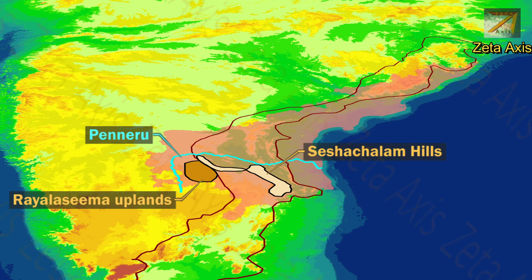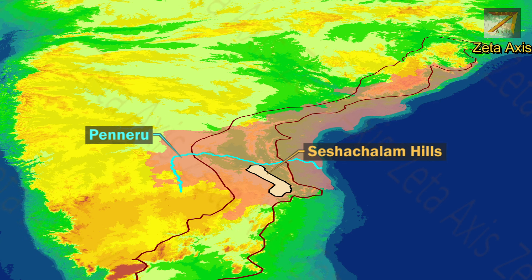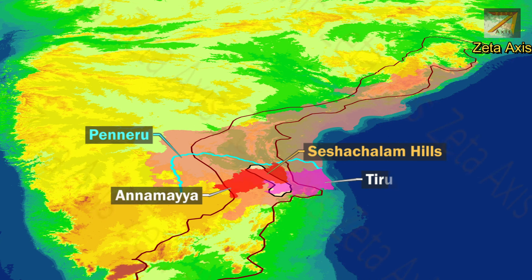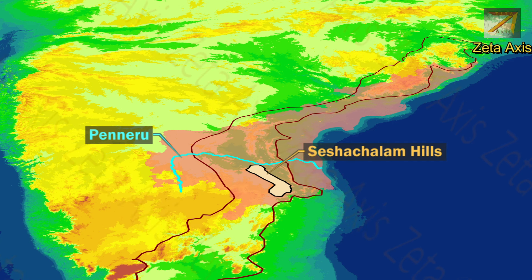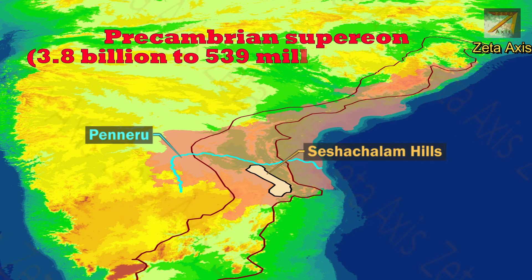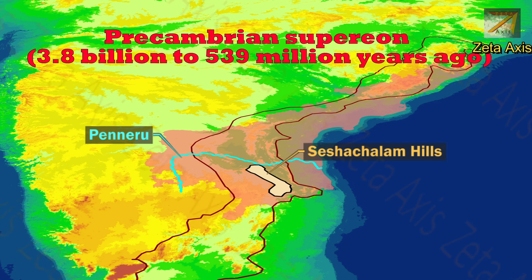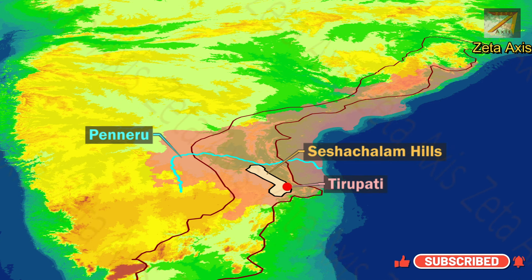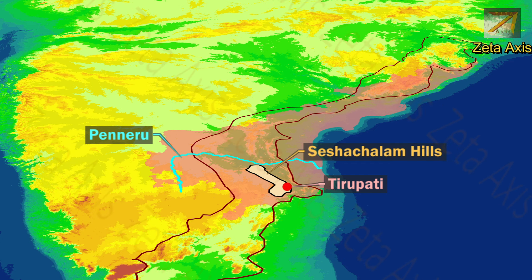The next mountain range is the Seshachalam hills, part of the Eastern Ghats located in southern Andhra Pradesh. The Seshachalam hill ranges are predominantly present in Annamaya and Tirupati districts of the Rayalaseema region. The Seshachalam ranges were formed during the pre-Cambrian age and are mainly formed of sandstone and shales. The tributaries of the Peniru river drain the northern region of the Seshachalam hills.